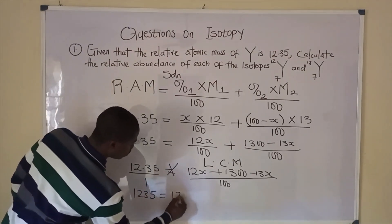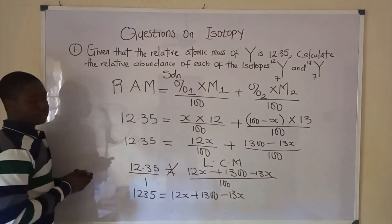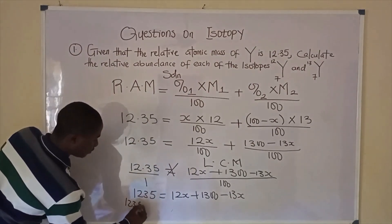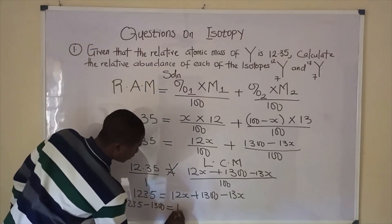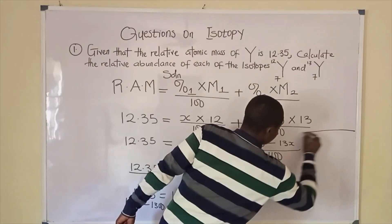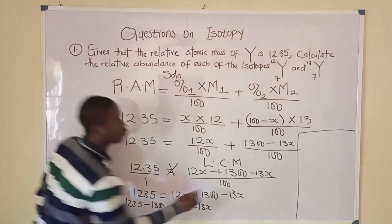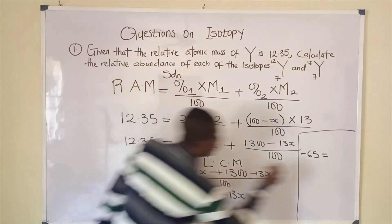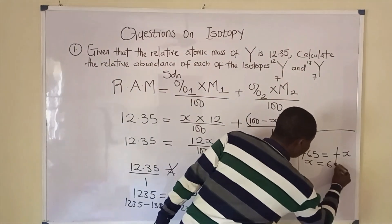Collecting like terms: multiplying both sides by 100 gives 1235 minus 1300 equals 12X minus 13X. This gives us minus 65 equals minus X, so X equals 65%.